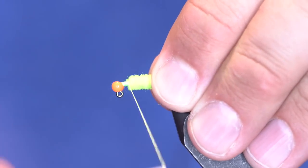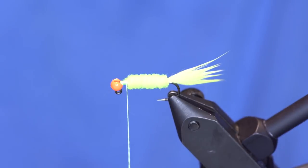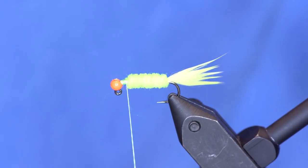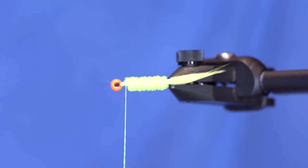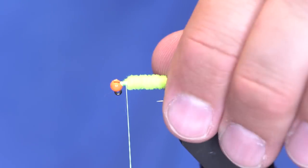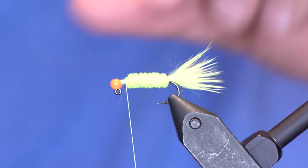Just like that. And you can vary the size of your bead. I just have a 3.3-millimeter bead, and this is the Hareline bead. I use that instead of the Hanak bead on this one because it has a little bit bigger slot and it will allow the bead to slide all the way over that 90-degree hook point or hook eye.